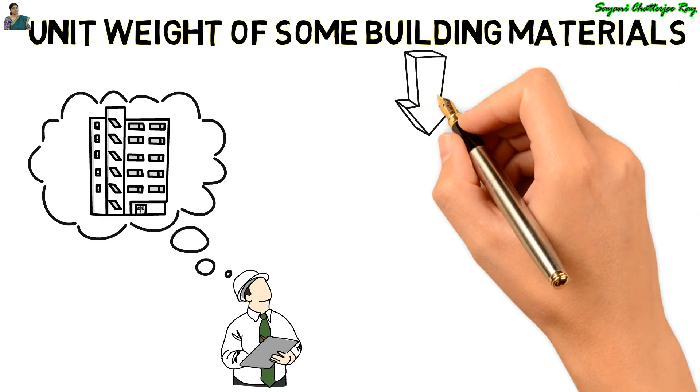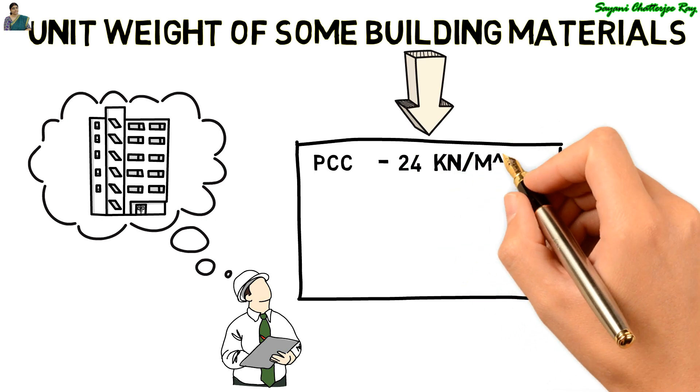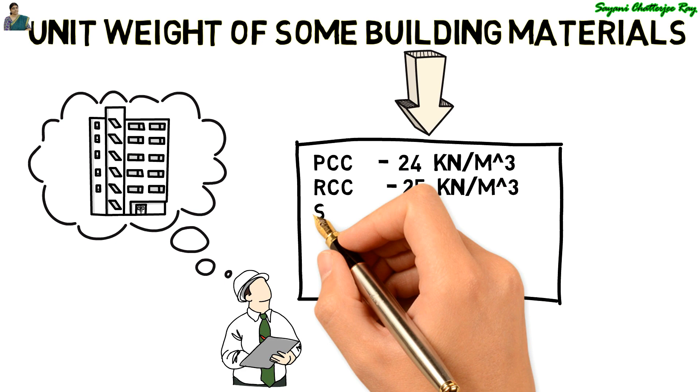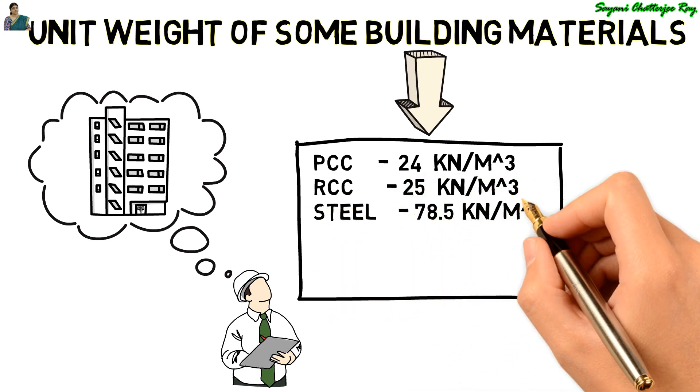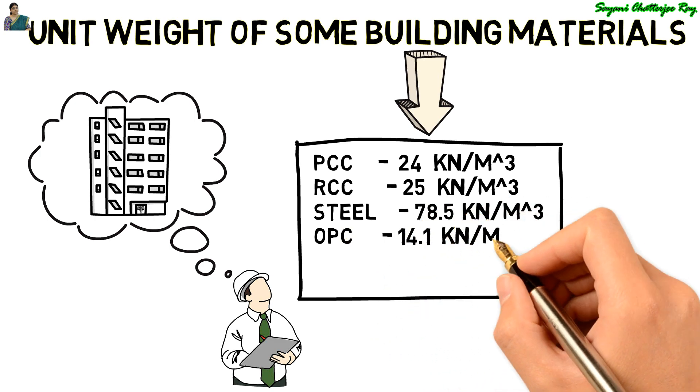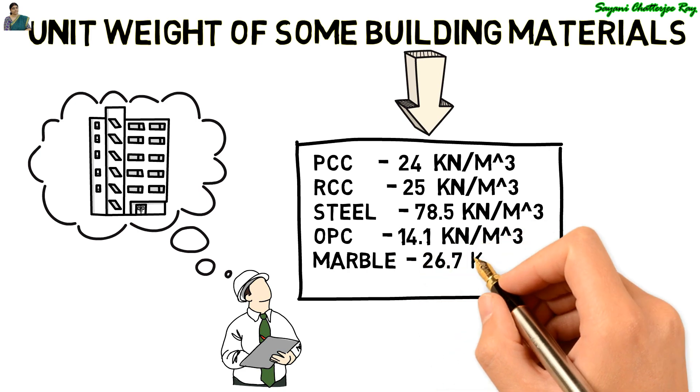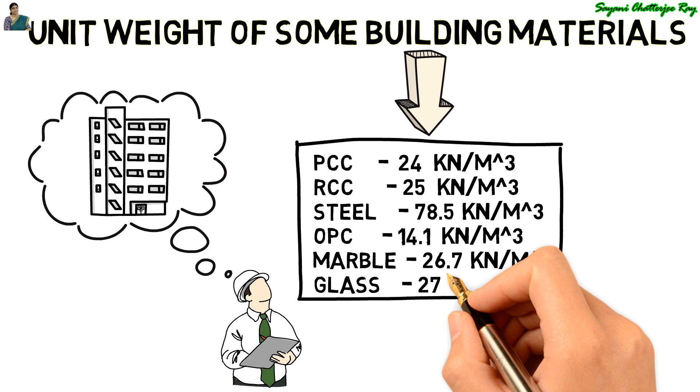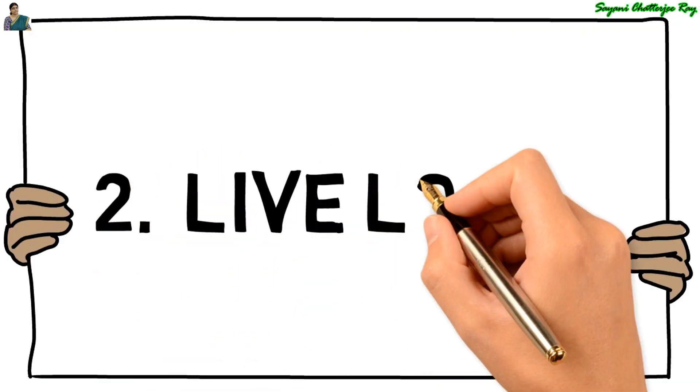Some of them are listed below. The unit weight of plain cement concrete is 24 kN per meter cube. Reinforced cement concrete is 25 kN per meter cube. For steel it is 78.5 kN per meter cube. For ordinary Portland cement it is 14.1 kN per meter cube. For marble it is 26.7 kN per meter cube, and for glass it is 27 kN per meter cube.